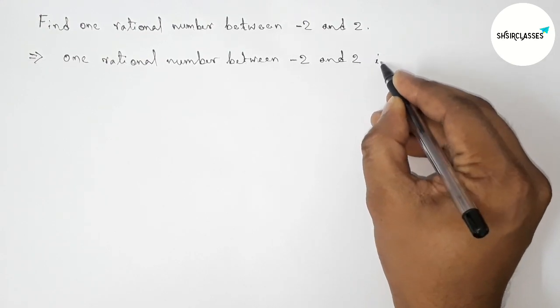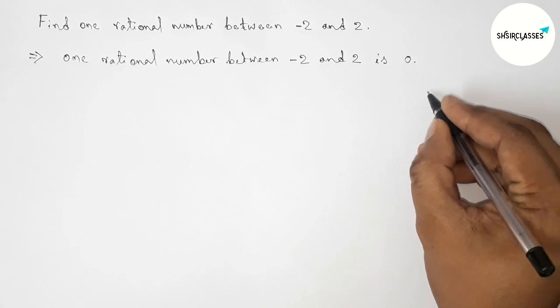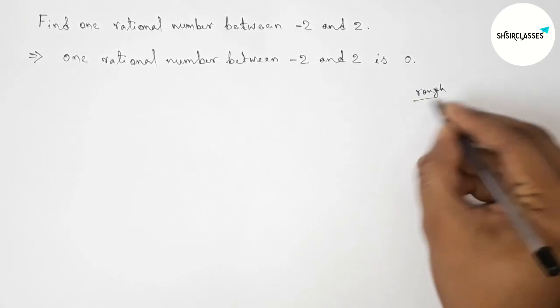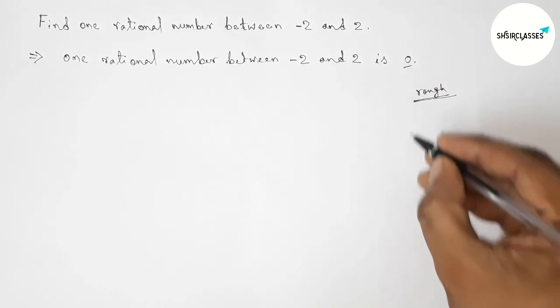-2 and 2 is obviously 0. Now discussing something important: we can express 0